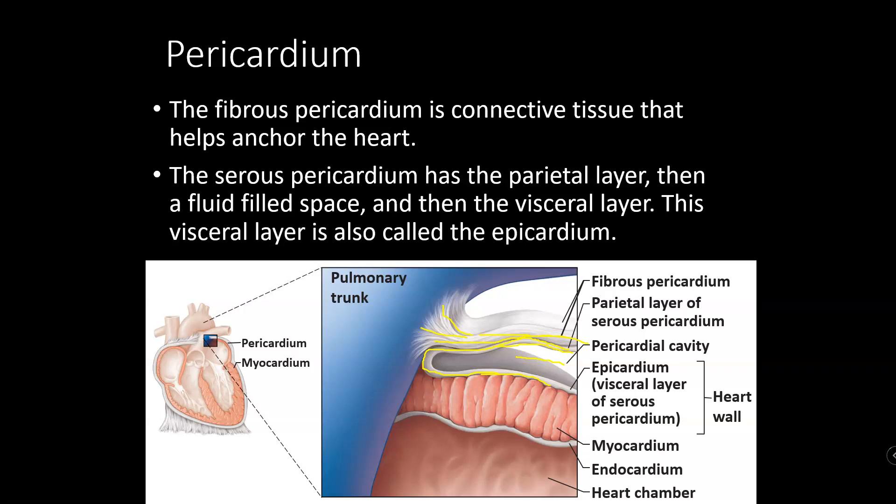Always: parietal layer, fluid-filled space, then the visceral layer. The visceral layer of the pericardium is also called the epicardium — because we have to make things more complicated in A&P, so we have multiple names just for fun. The overall function of the pericardium is to reduce friction because the heart is moving all day, every day. We don't want it rubbing up against the sternum, and so that fluid-filled sac helps make sure that does not happen.